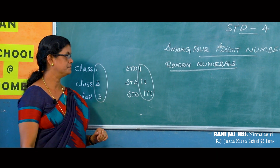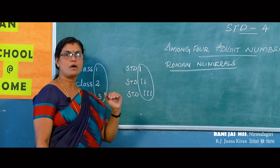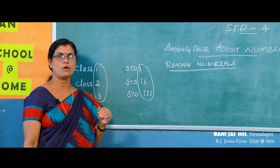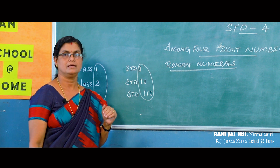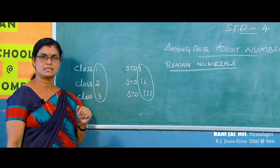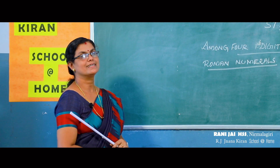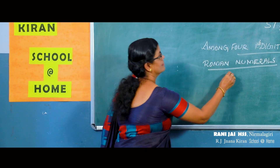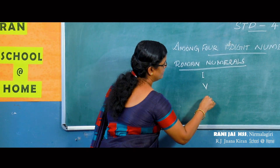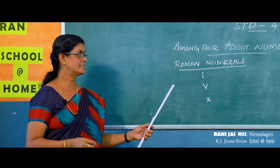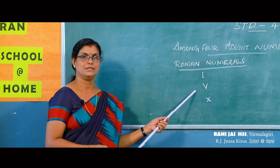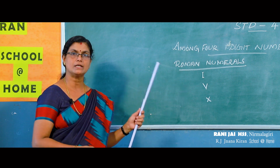In the Roman number system, we use English alphabets to denote the numbers. We use 7 English letters to denote Roman numerals. The first 3 letters are I, V, and X. Using these 3 letters, you can write all the numbers from 1 to 10.